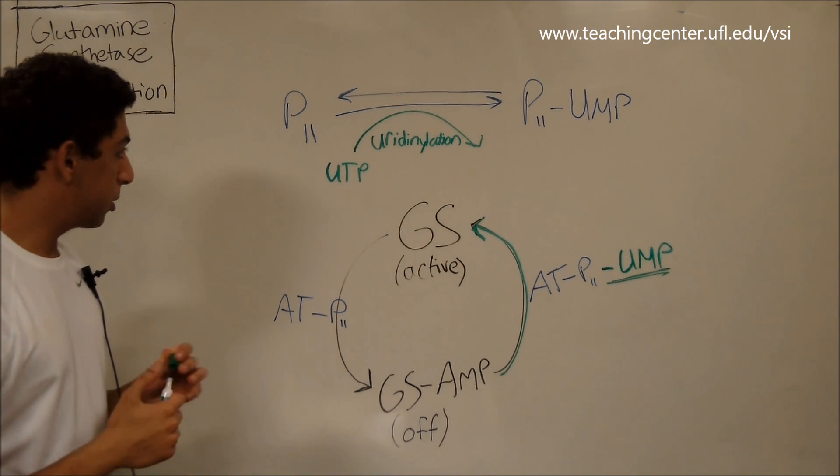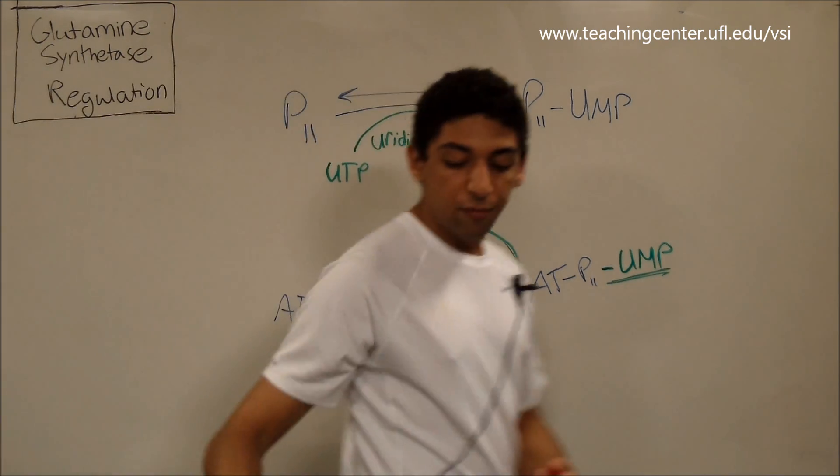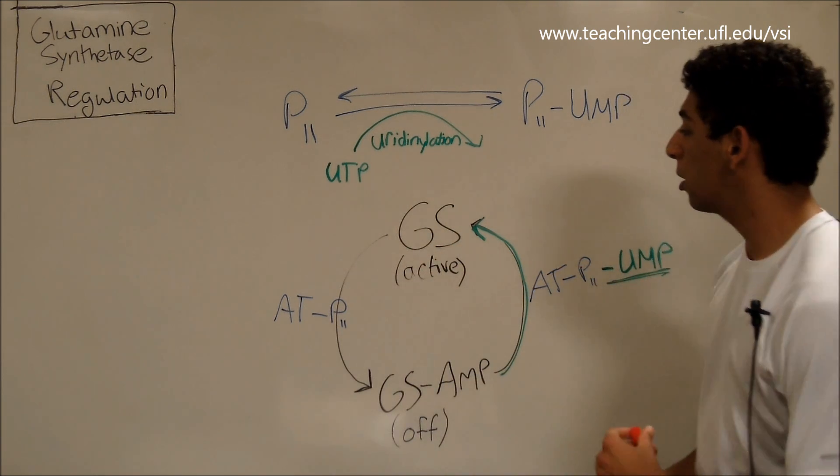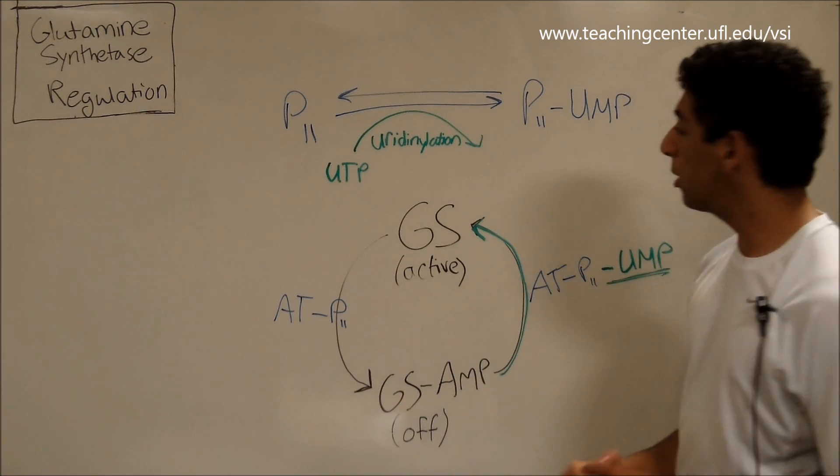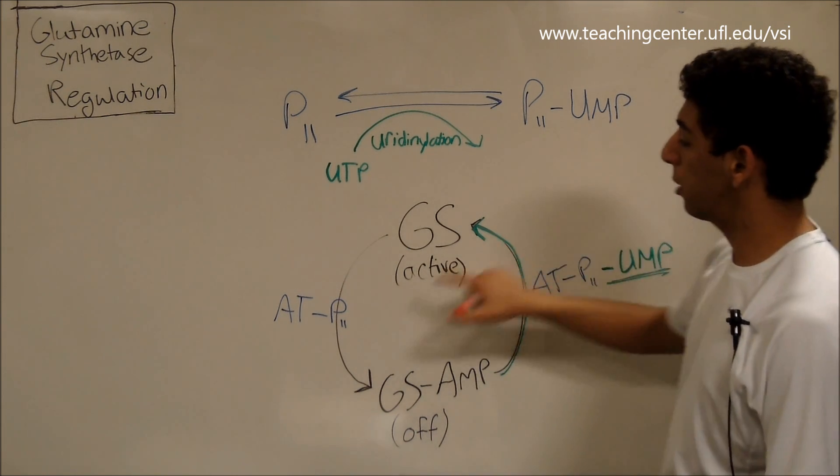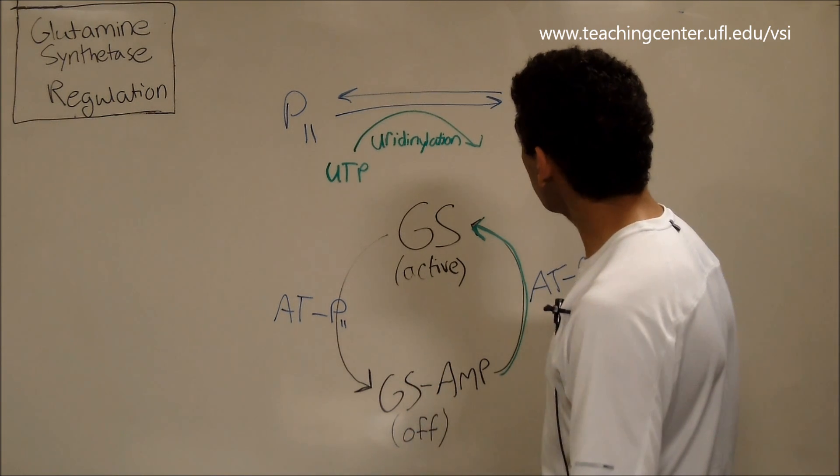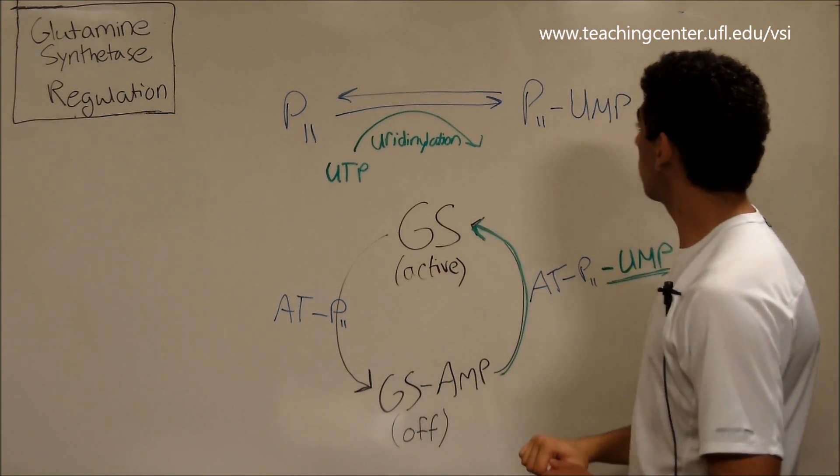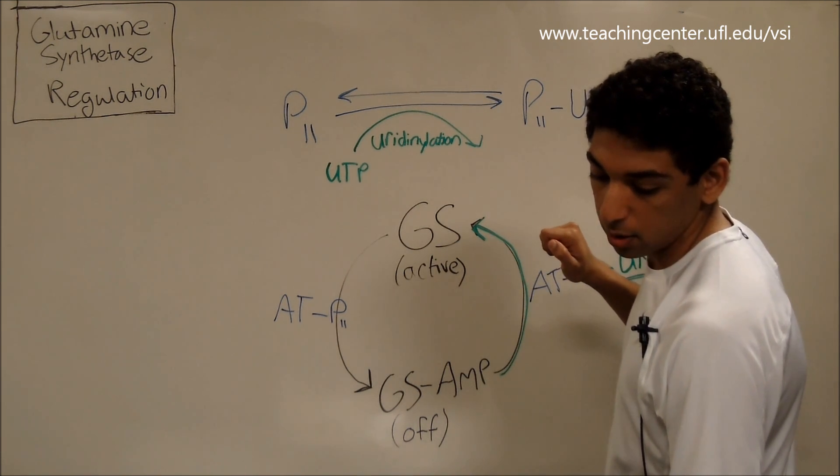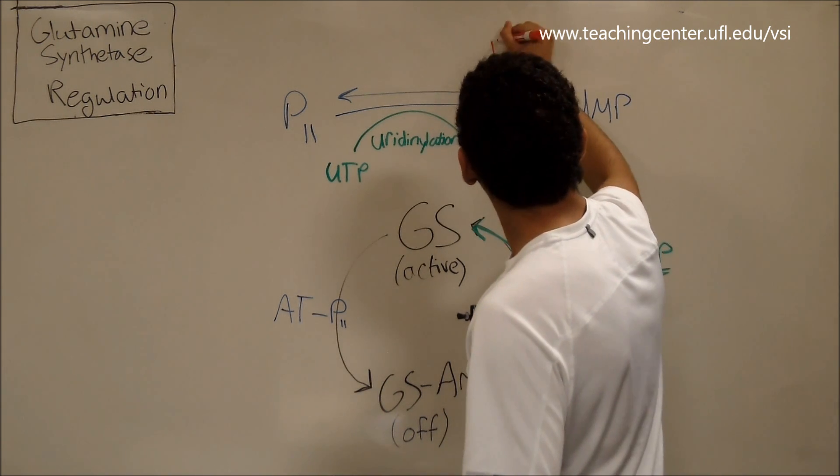And now going in the backwards direction, let's say now we have UMP, but we want to turn this pathway off. We want to turn glutamine synthetase off. We're going to need to take the UMP off of the P2 molecule so that we can activate this half. So the way we do it is we've already got UMP on, and so we just hydrolyze it. So we take water.